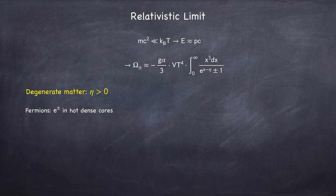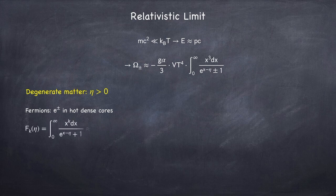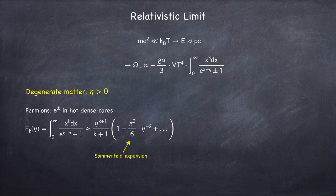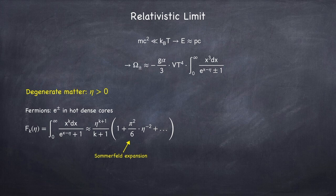In the degenerate case, the Fermi integral can be approximated using the Sommerfeld expansion. If you don't know what the Sommerfeld expansion is, it's a standard mathematical trick of approximating certain types of integrals.